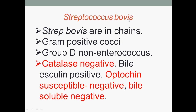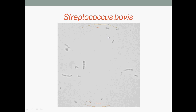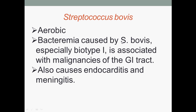The final bacterium is Streptococcus bovis. They are gram-positive cocci in chains, and are group D non-enterococcus. They are catalase negative, bile-esculin positive, optochin susceptible, and bile solubility negative. Bacteremia caused by Streptococcus bovis, especially biotype 1, is associated with malignancies of the gastrointestinal tract. It also causes endocarditis and meningitis.